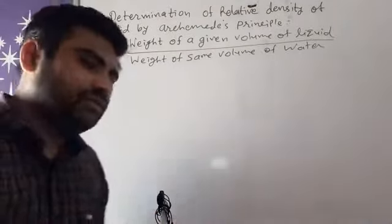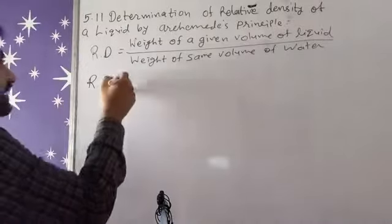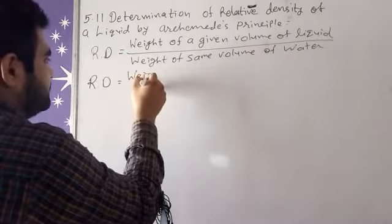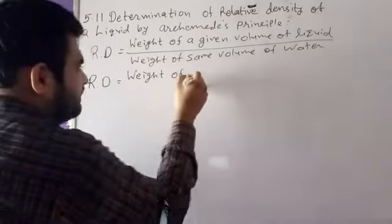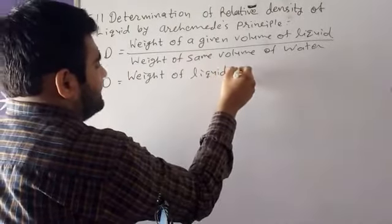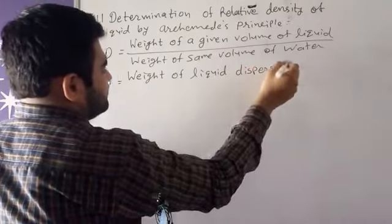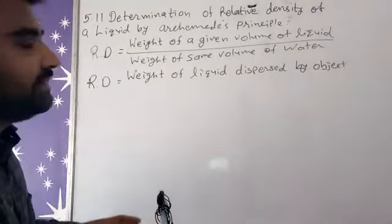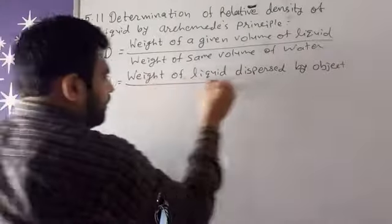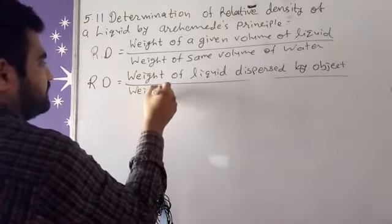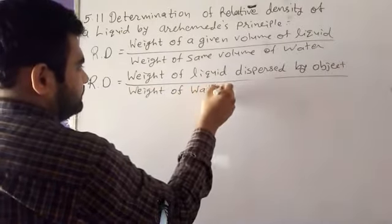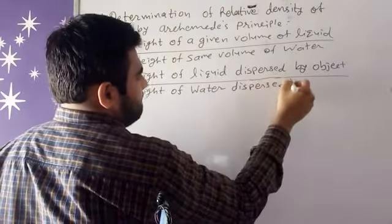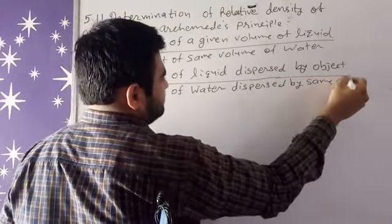According to this, if we write a second formula — because there are many formulas and we move from one term to another — so relative density in another form is: weight of liquid dispersed by the object, upon weight of water dispersed by the same object.